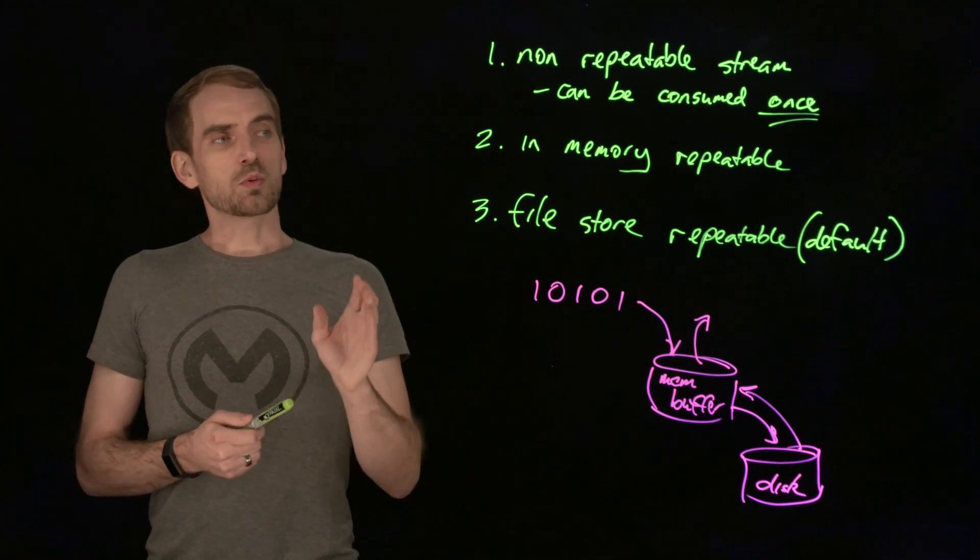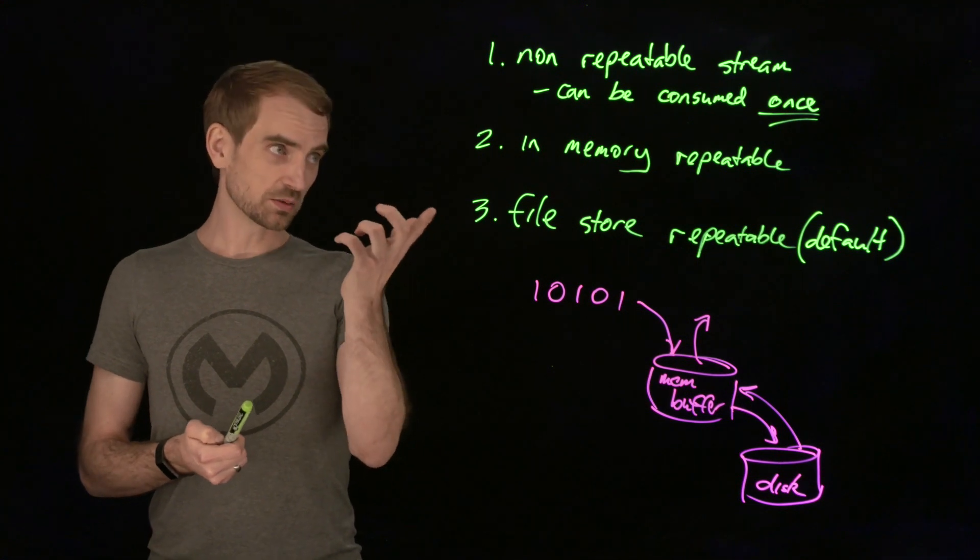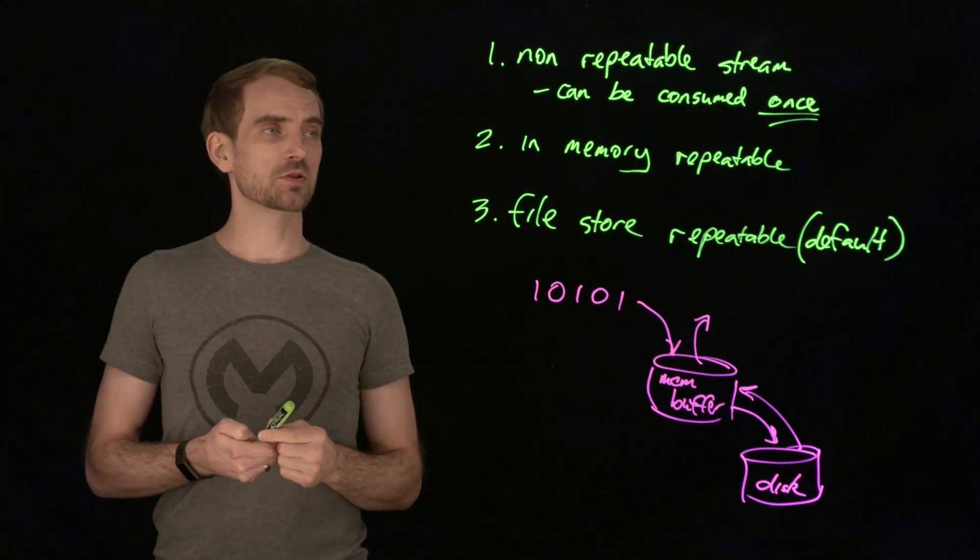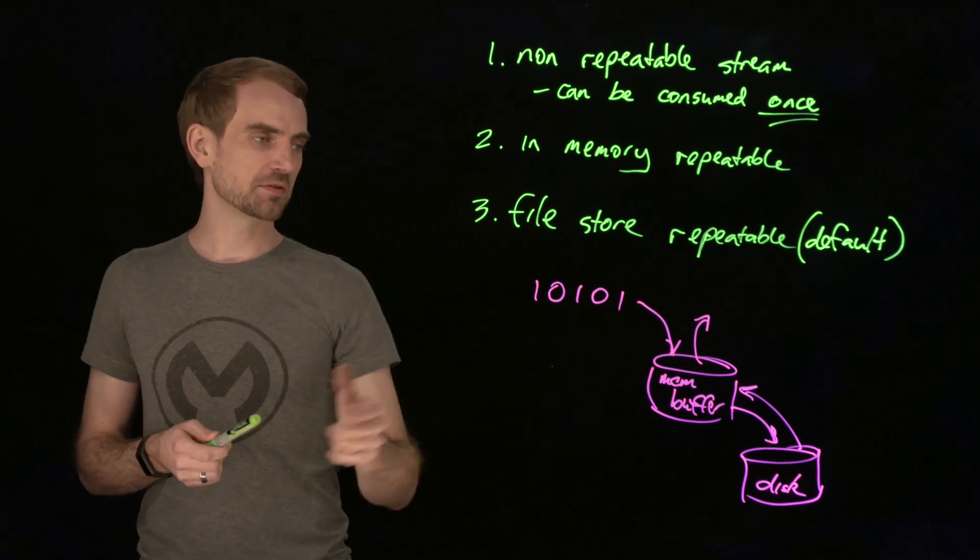So we have two other options built into the Mule runtime in terms of functionality that will deal with this problem, and they are repeatable streams. One which uses an in-memory buffer.